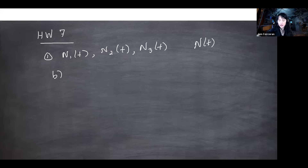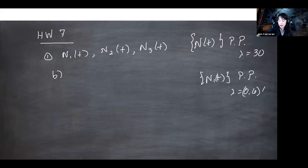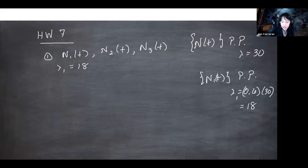We have the overall process given as a Poisson process. When you thin them out, N(t) is a Poisson process with rate 30, and N1(t) is a Poisson process with rate 60% of 30, which is 18 — I'll call that lambda 1. So we have all these individual Poisson processes: lambda 1 is 18, lambda 2 is 9, and lambda 3 is 3.